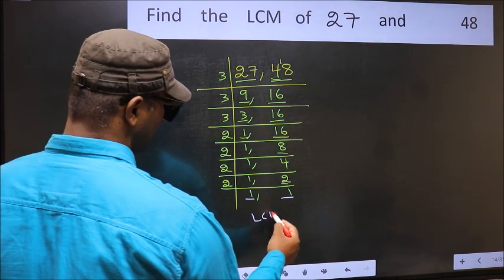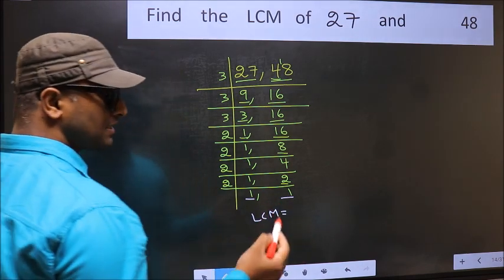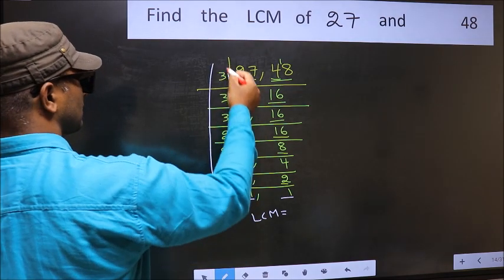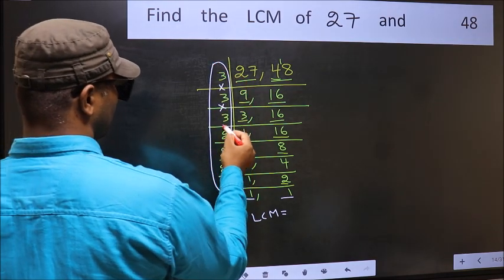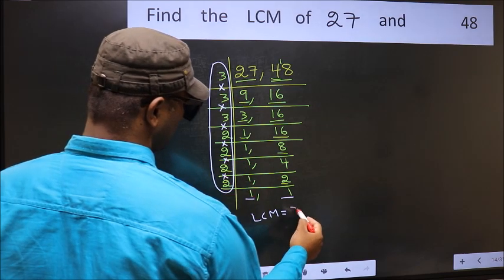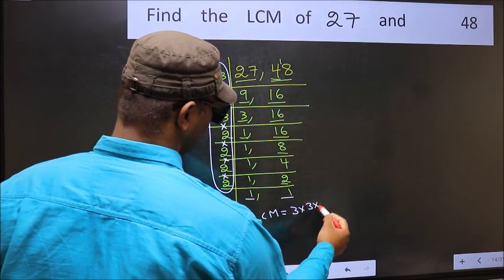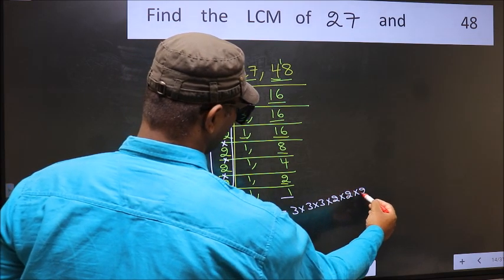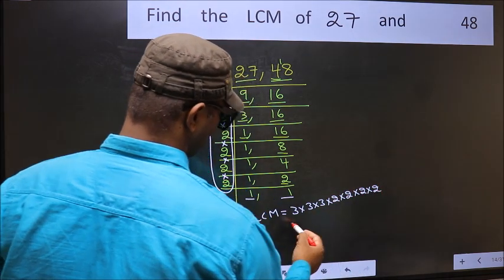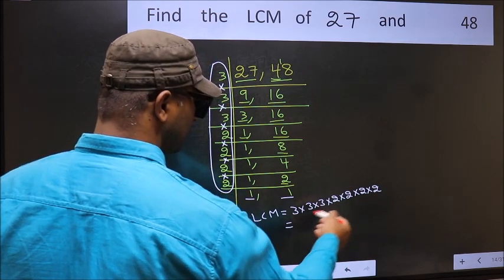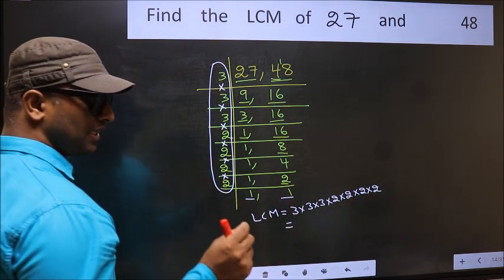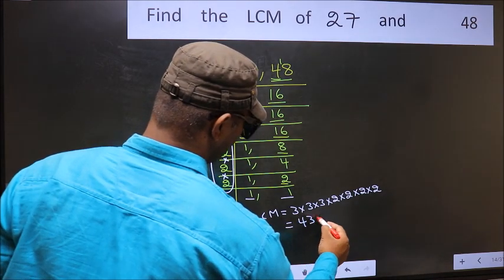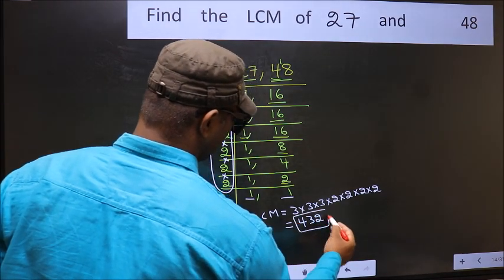So our LCM is the product of all these numbers. That is 3 into 3 into 3 into 3 into 2 into 2 into 2 into 2. When we multiply these numbers, we get 432 as our LCM.